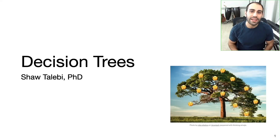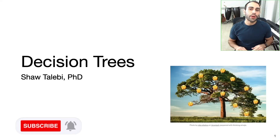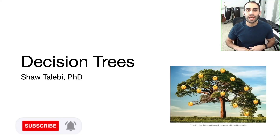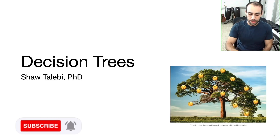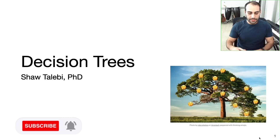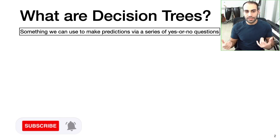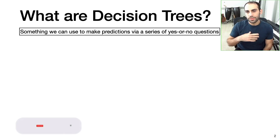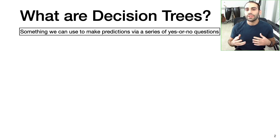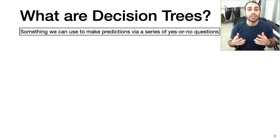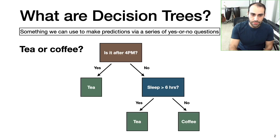Hey everyone, I'm Shaw, and in this video I'm going to be giving a brief introduction to decision trees. We might ask ourselves, what are decision trees? Put very simply, a decision tree is something we can use to make predictions via a series of yes or no questions. So let's look at a concrete example.